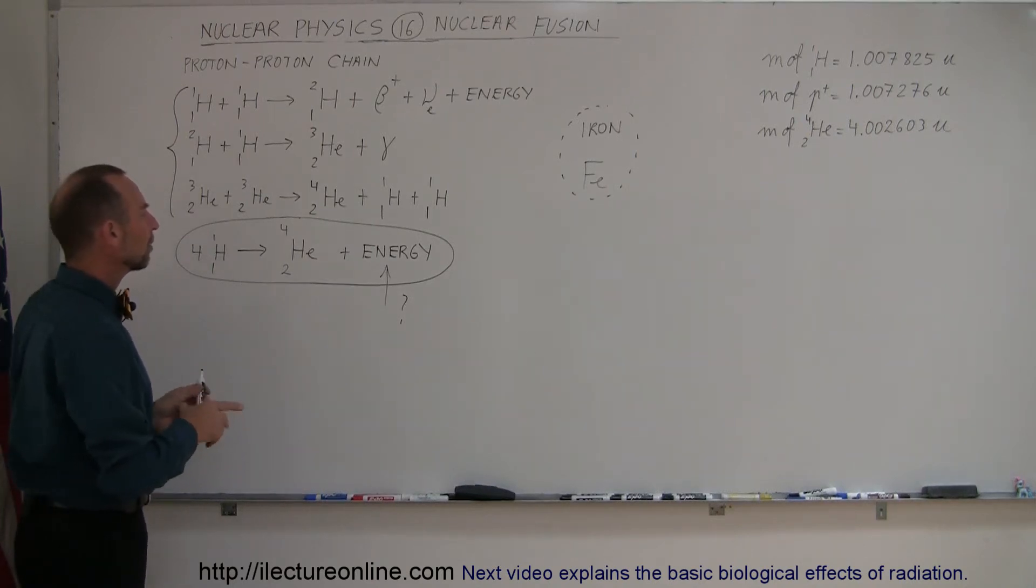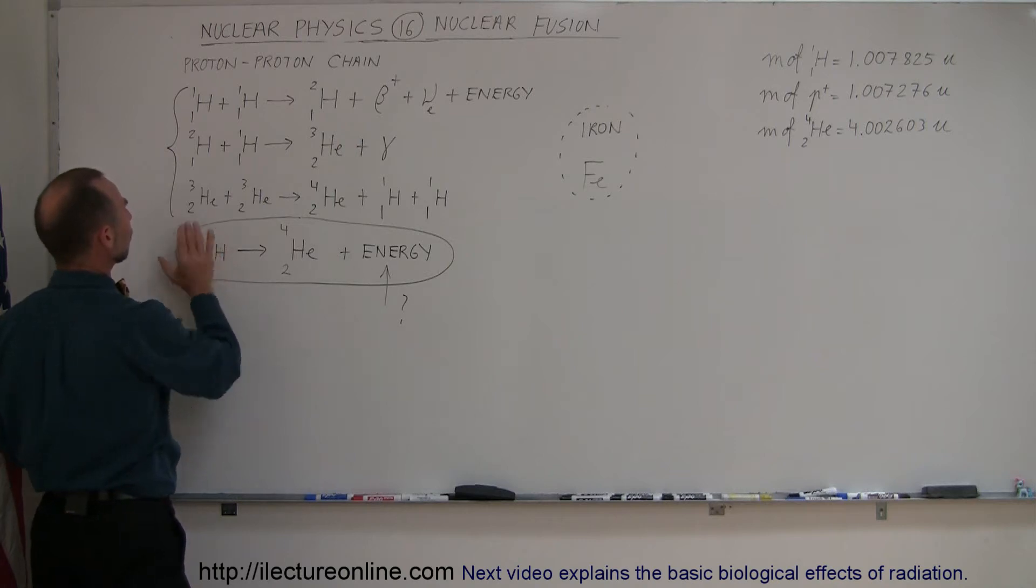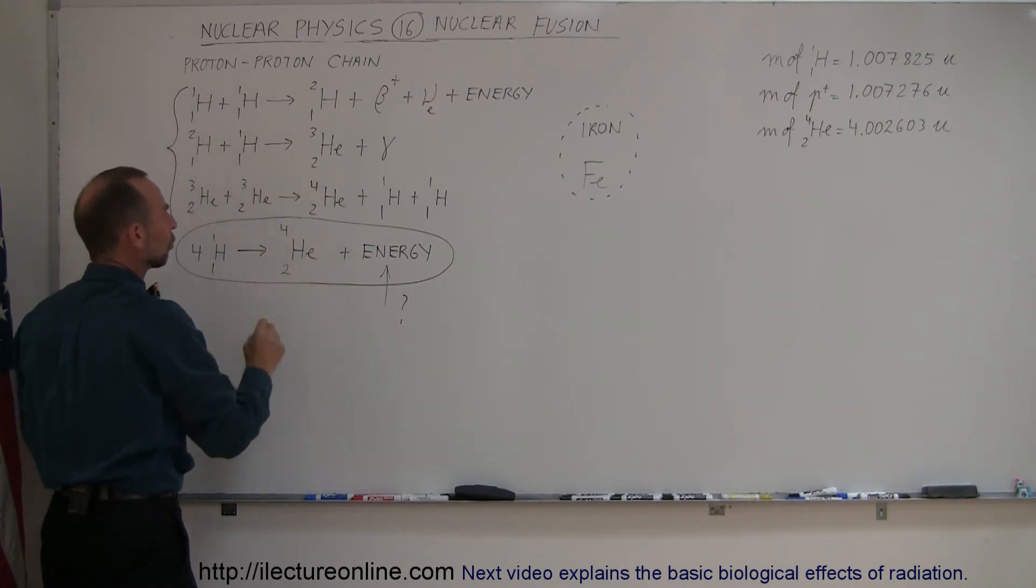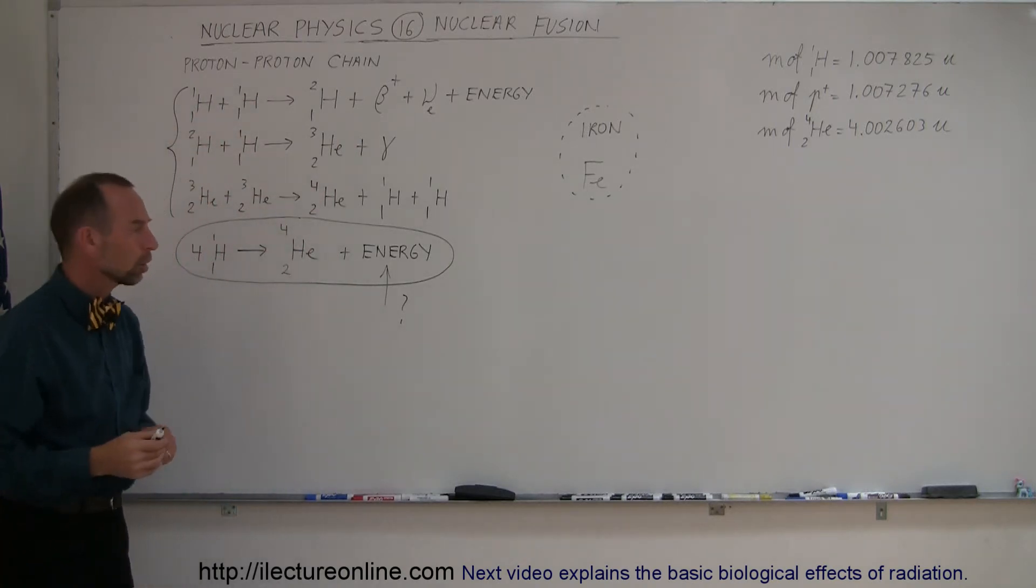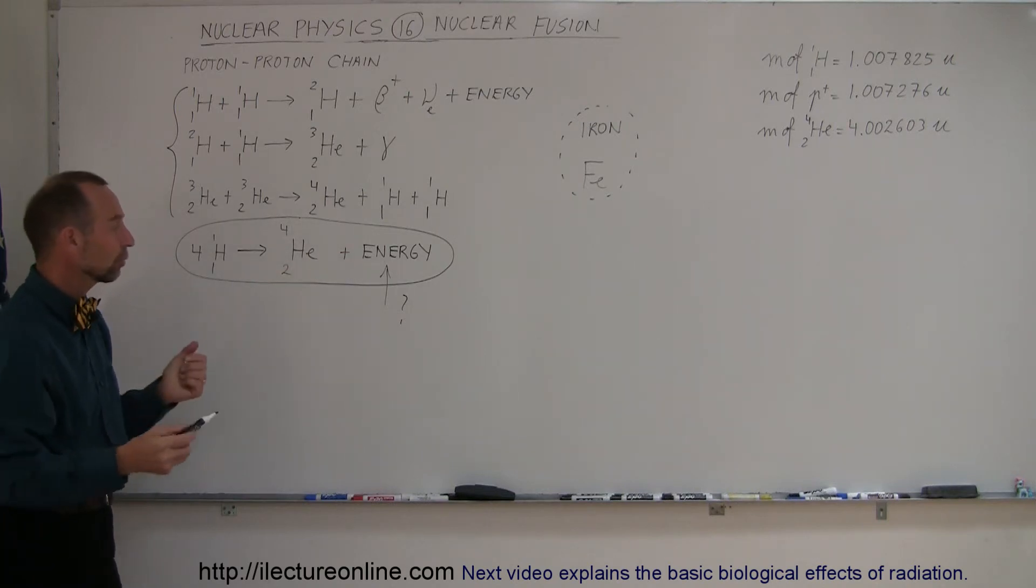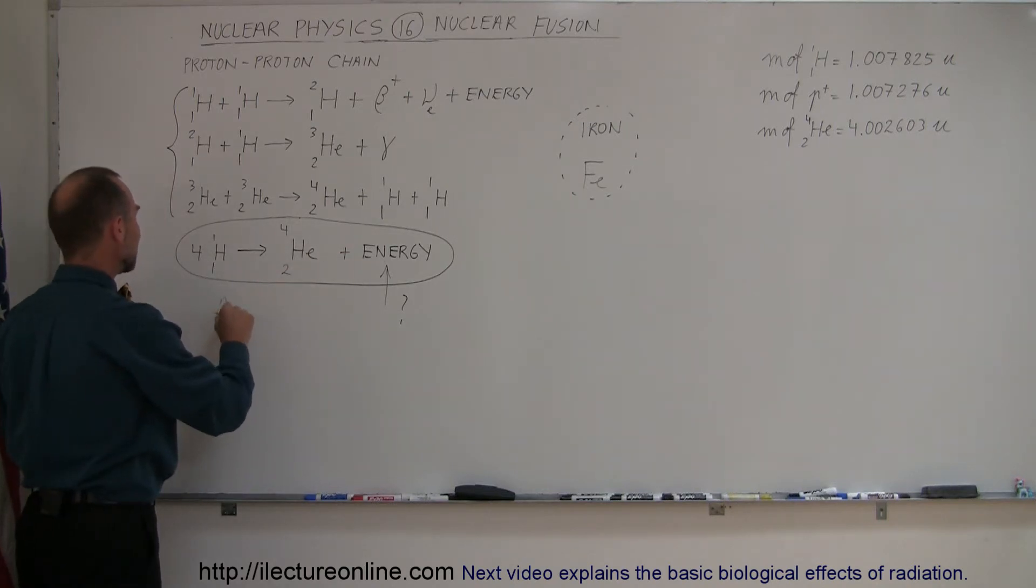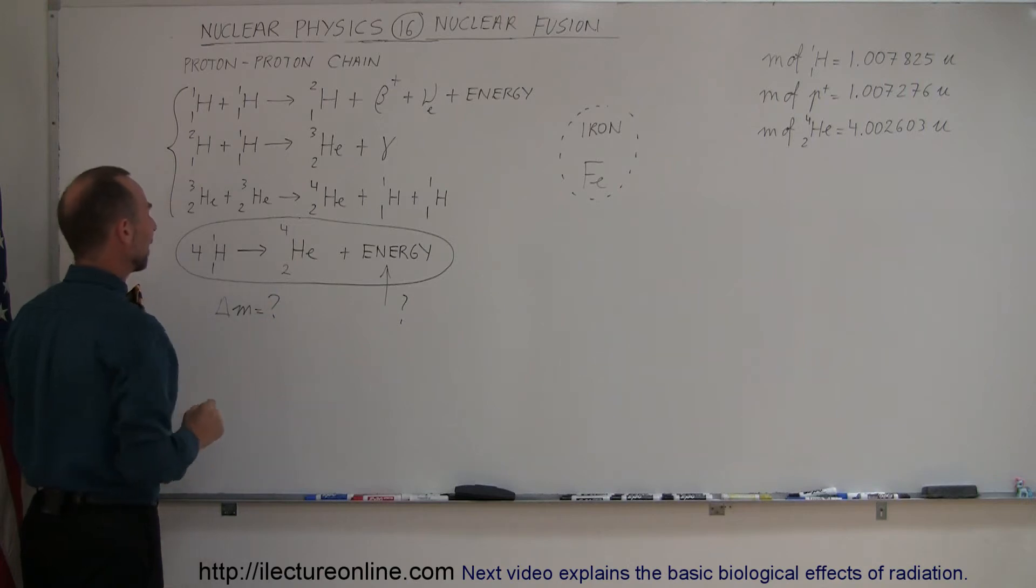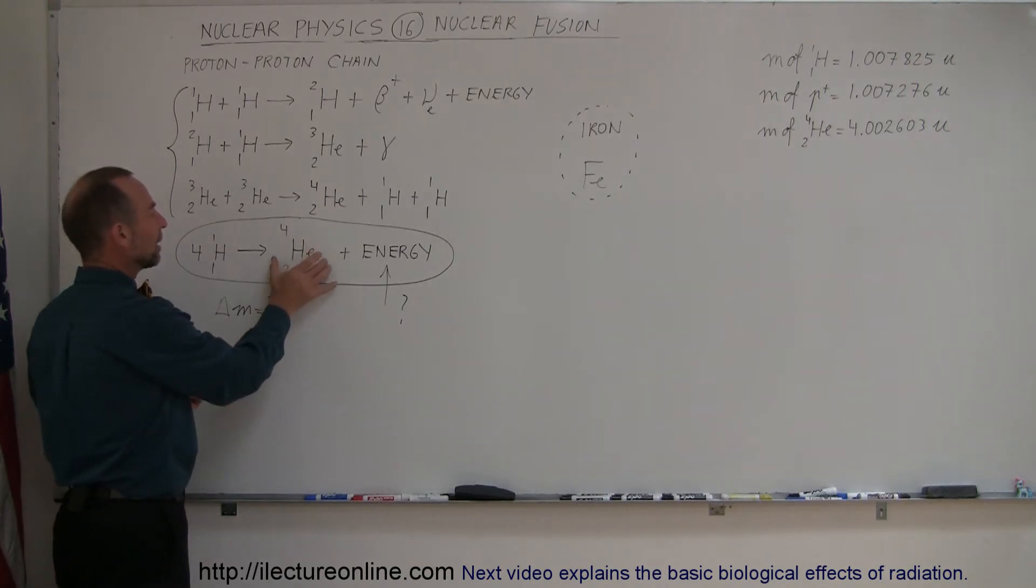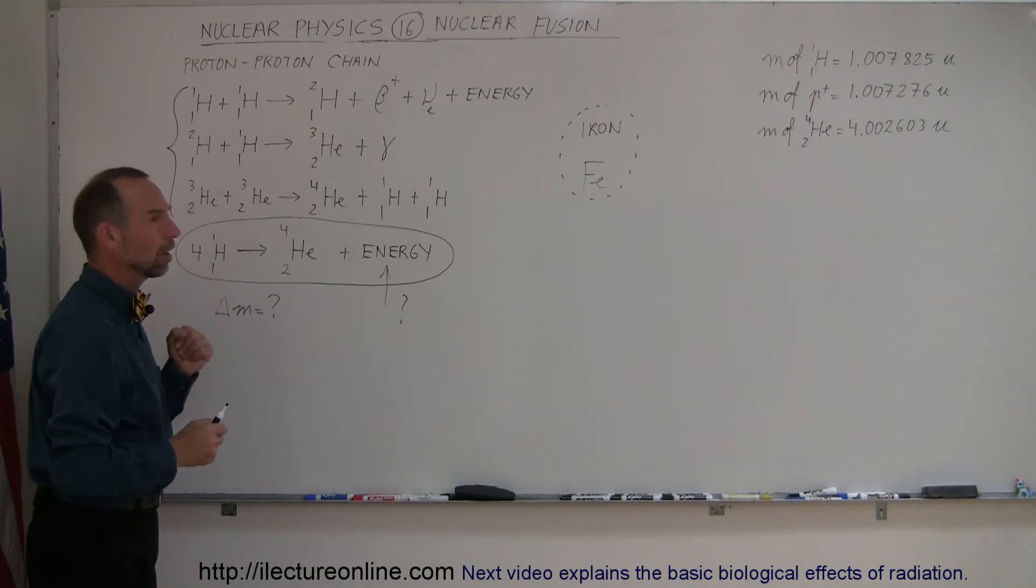We're going to look at it very simplistically. We're going to say let's take four hydrogens through a set of processes that eventually turn into a helium nucleus, and find how much energy is released. We need to find the missing mass or the mass defect, so we're going to take the mass of a helium nucleus and subtract the mass of four protons.